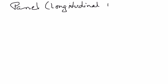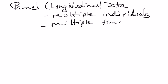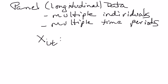If time permits, at the end of the semester we'll look at what we call panel data — some people call this longitudinal data. The key point is you're going to have multiple individuals and multiple time periods. When working with panel data, the variable X will have both an I subscript for the individual and a T subscript for the time period. For example, if X is GDP per capita, we might have data on all the countries in the world from 1950 to the present.